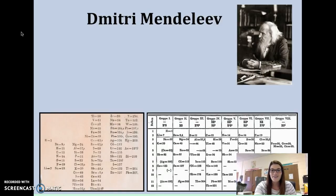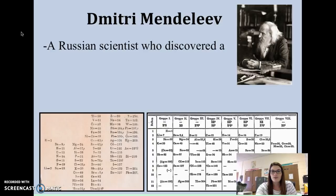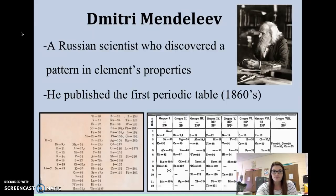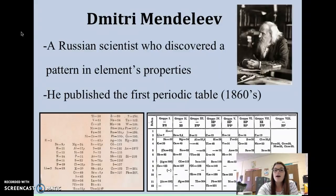This guy is Dmitry Mendeleev. He is kind of the rock star of the Periodic Table. He was a Russian scientist who discovered a pattern in elements' properties. He is the guy that published the first Periodic Table way back in the 1860s. So the Periodic Table is nothing new — it's been around for a really long time, although you can see on the bottom of your screen it has changed a lot over time.